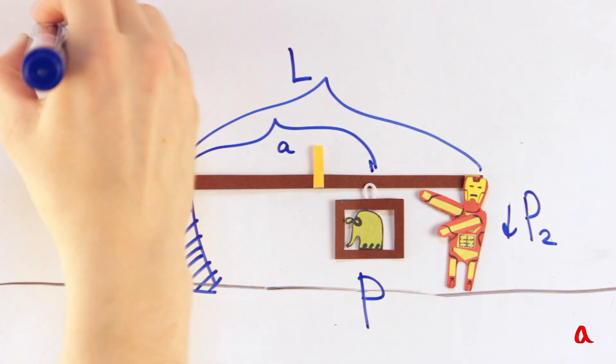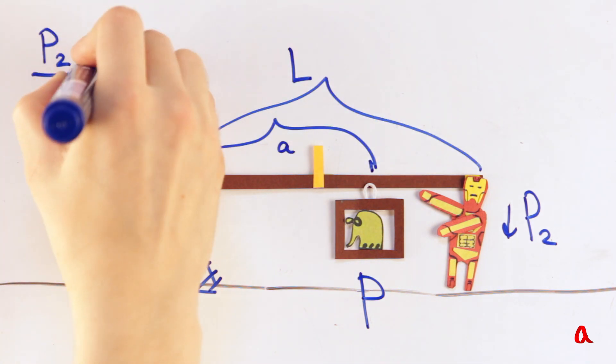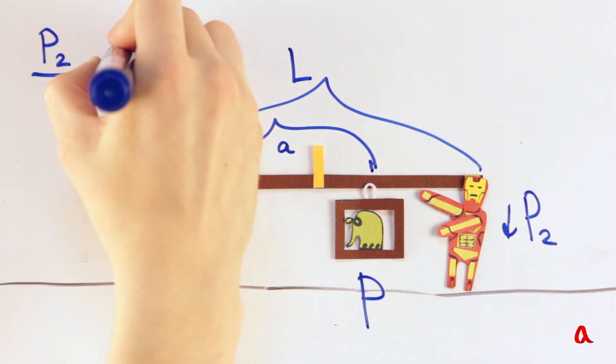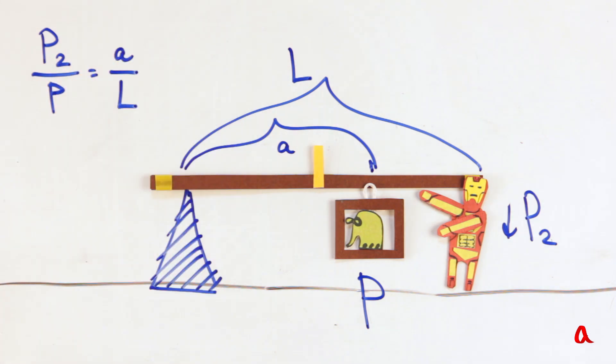The P2 loading relates to the weight of load P in the same way as the load's arm A relates to the length of the stick L.